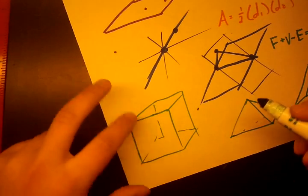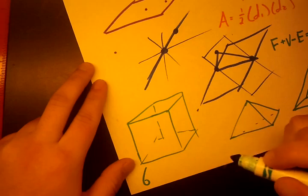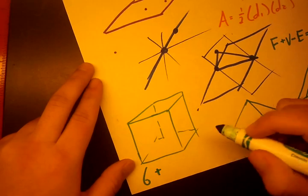So let's test that. How many faces are on a cube? We have 6. How many vertices are on a cube? We have 8.